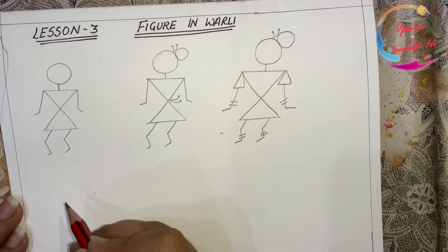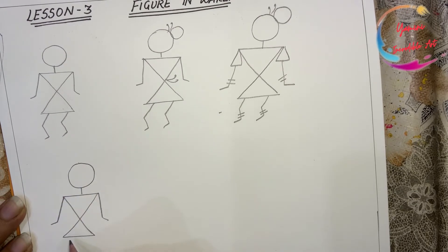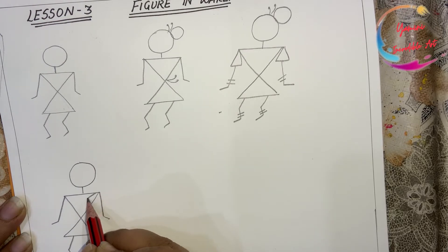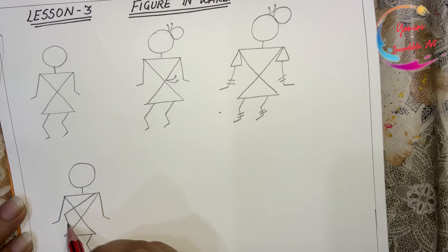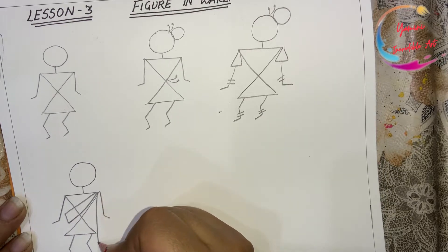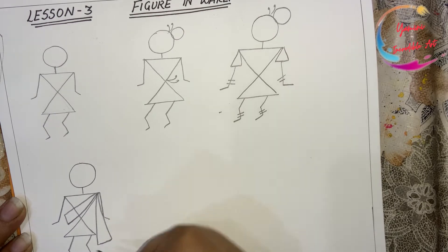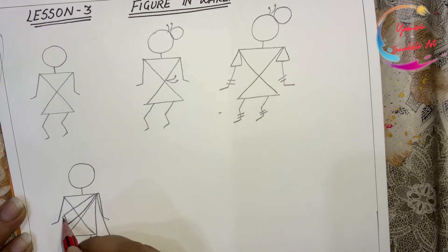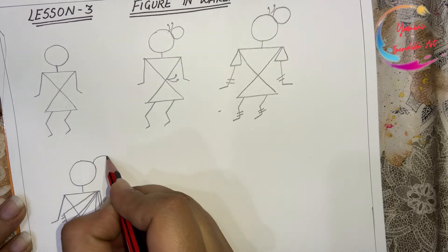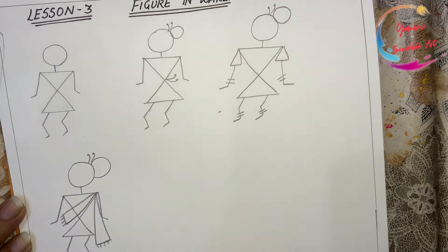Here I am going to make another woman. Here I am going to add dupatta. Now how can I make dupatta? Make one triangle over here like this, then one more like this. It will represent her dupatta. Again one juda like this.